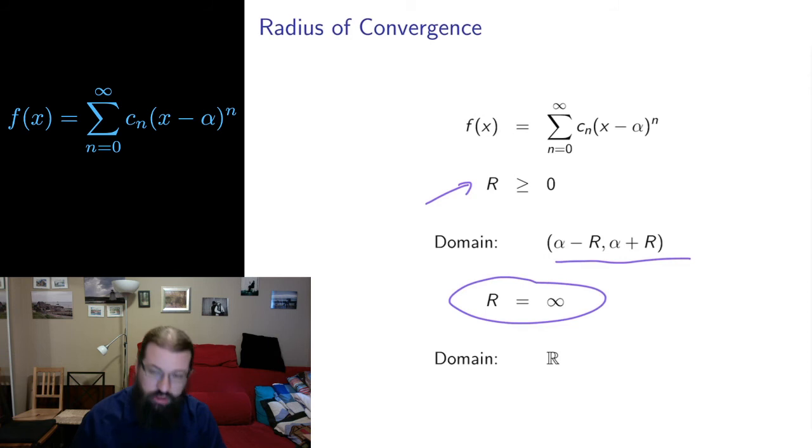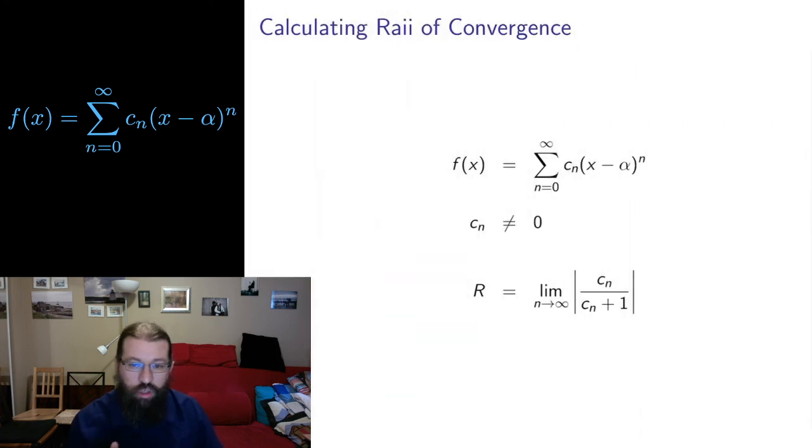It's possible that it converges everywhere, in which case we say the radius is infinity. We think about going out arbitrarily far from the center point alpha. In this case, the domain is all real numbers. So radius of convergence with the shorthand radius equals infinity if we want convergence for all real numbers. For calculating radius of convergence, we have some very, very nice methods. The most general method, which I'm not going to go over here, is to use the ratio test. The ratio test will always give you a radius of convergence by calculating the limit in the ratio test, setting it less than one, and using that to determine the radius of convergence.